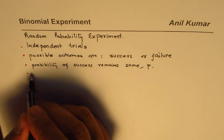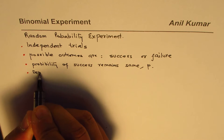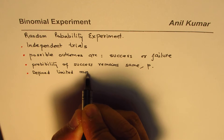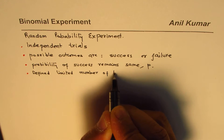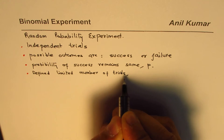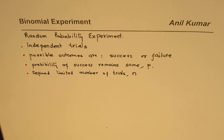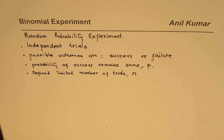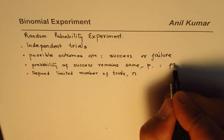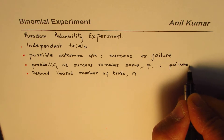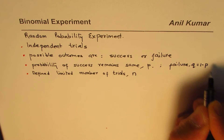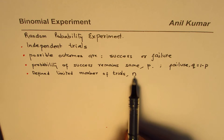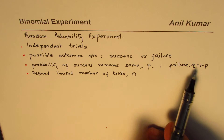Whenever you have an experiment you have a limited number of trials, so we'll have a defined or limited number of trials. We define this as n, where n is the number of trials and probability of success is P. For failure it will be normally Q, which equals 1 minus P.